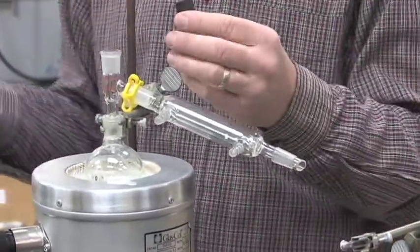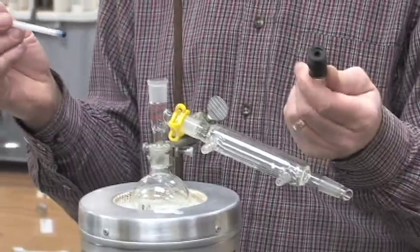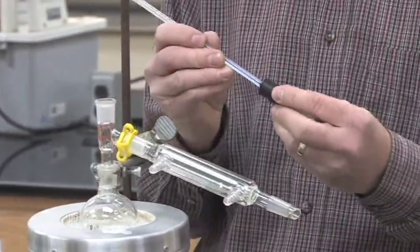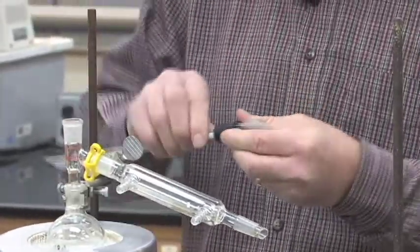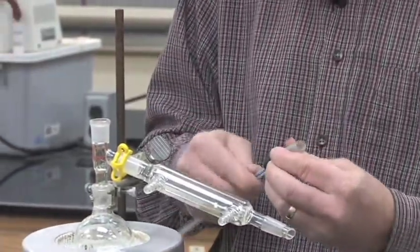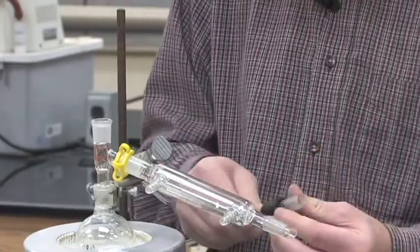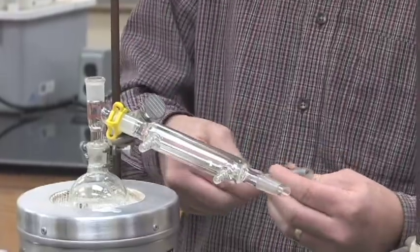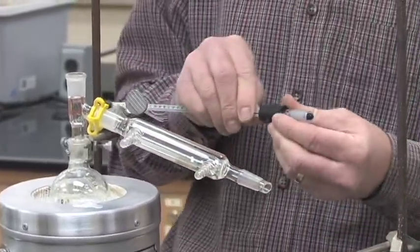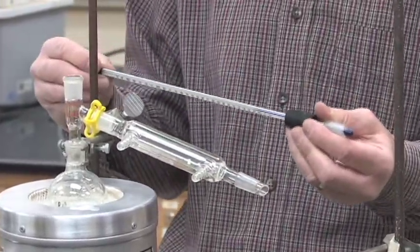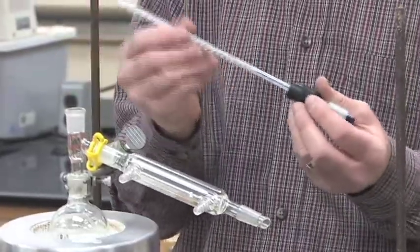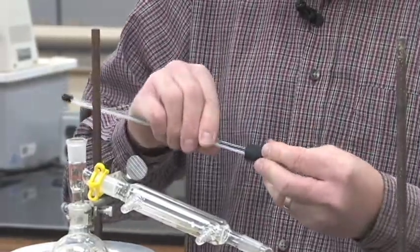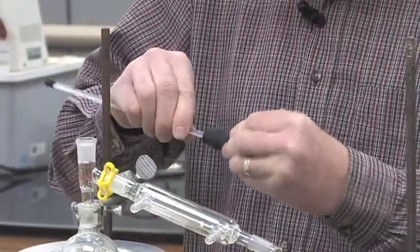We need to have our thermometer adapter and we need to put our thermometer in there. When we do that, we need to be very careful about sliding the thermometer in and when you add it in, slowly twist it and hold it close to the top of the thermometer adapter so that you don't put any force on the thermometer and end up breaking the thermometer. If you break the thermometer as you're pushing it in, it will end up sending the thermometer through the palm of your hand and we don't want to have that happen in the organic lab.